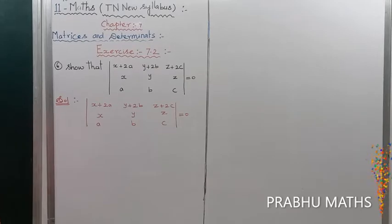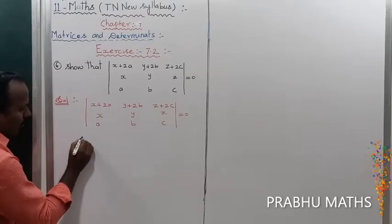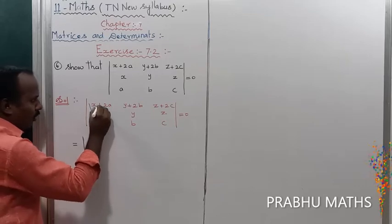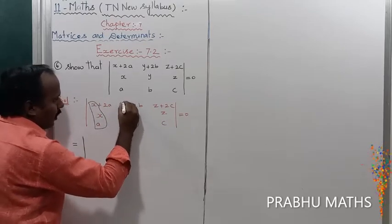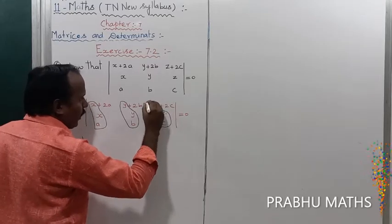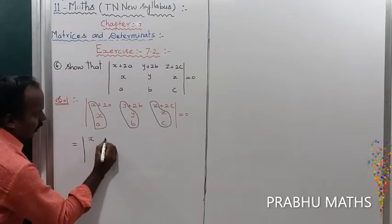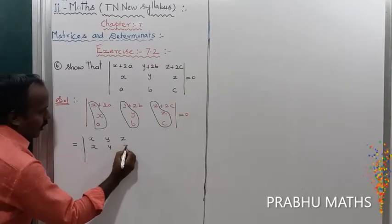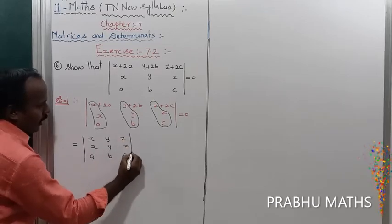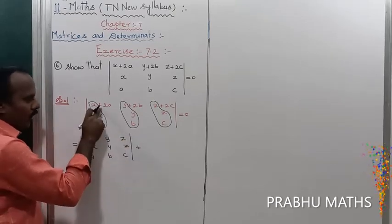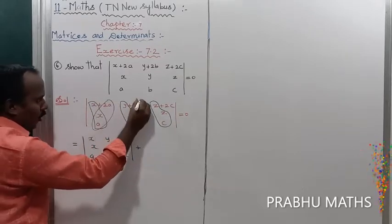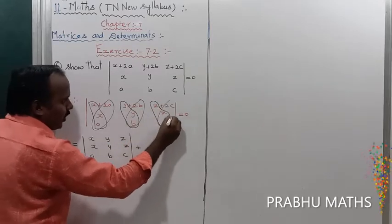By property number 7, we refer to property number 7, which gives us the first determinant value and the second determinant value. The first determinant has X, Y, Z in the first row, then X, Y, Z again, then A, B, C. Plus the second determinant value.